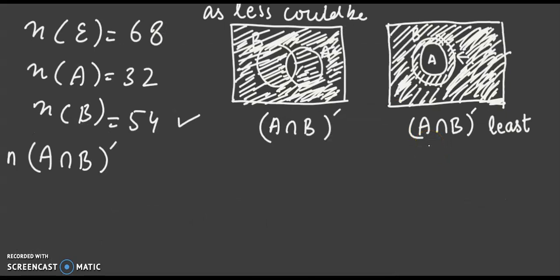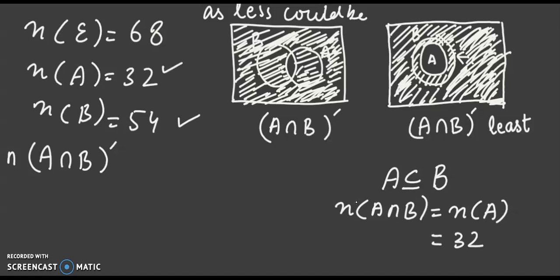Now we know that if such is the case that A is a proper subset of B, it means that the number of elements in A intersection B will become equal to number of elements in A, as you can see from the Venn diagram. But since we need to find... now the number of elements in A is already given which is 32. Now we move on forward.